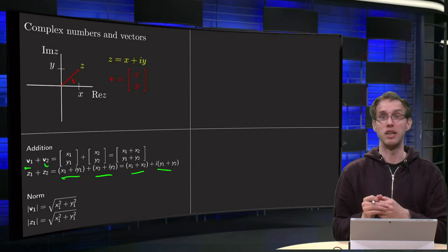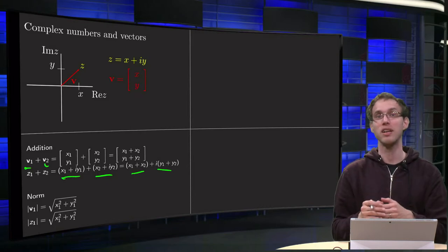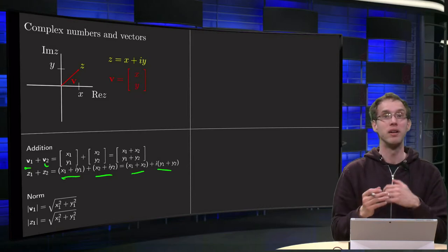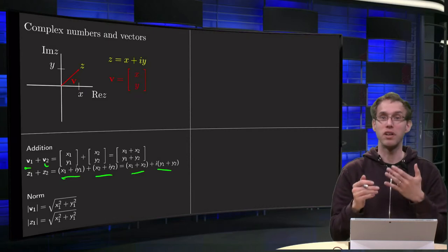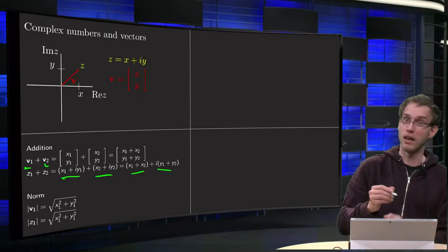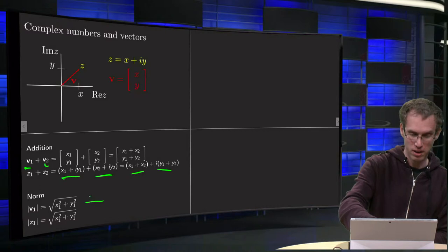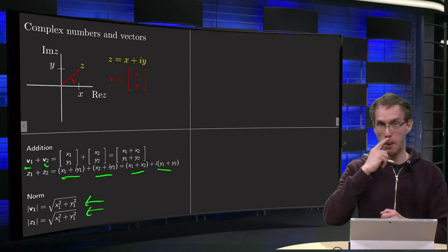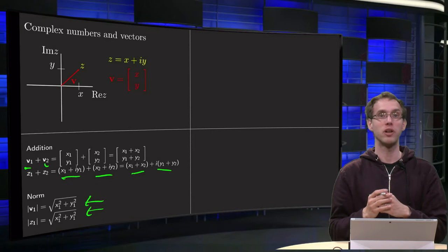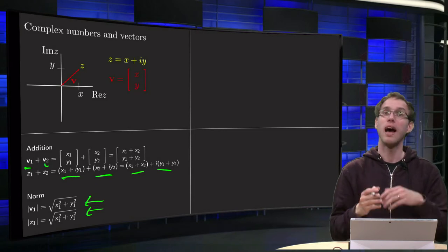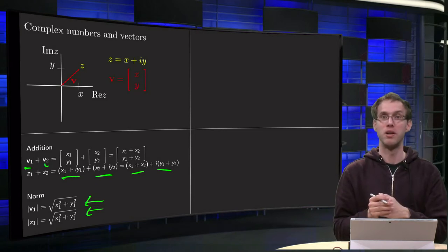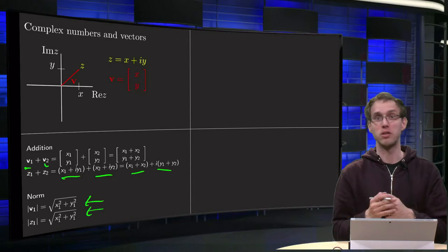Something else also works the same if you look at the norm of a vector and the norm of a complex number. There are different quantities, but if you compute them in the plane, they happen to be exactly the same. So that means that addition works the same, and subtraction as well, and also norms work the same for vectors and for complex numbers.